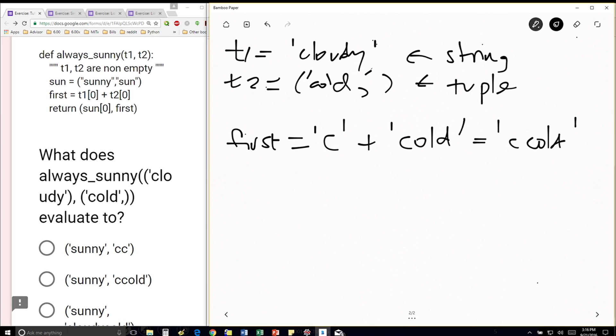And then I'm returning here a tuple. And the tuple I'm returning is sun at position 0, so that's just sunny, comma, just doing what's in here. And then first. And first was this string c, cold.